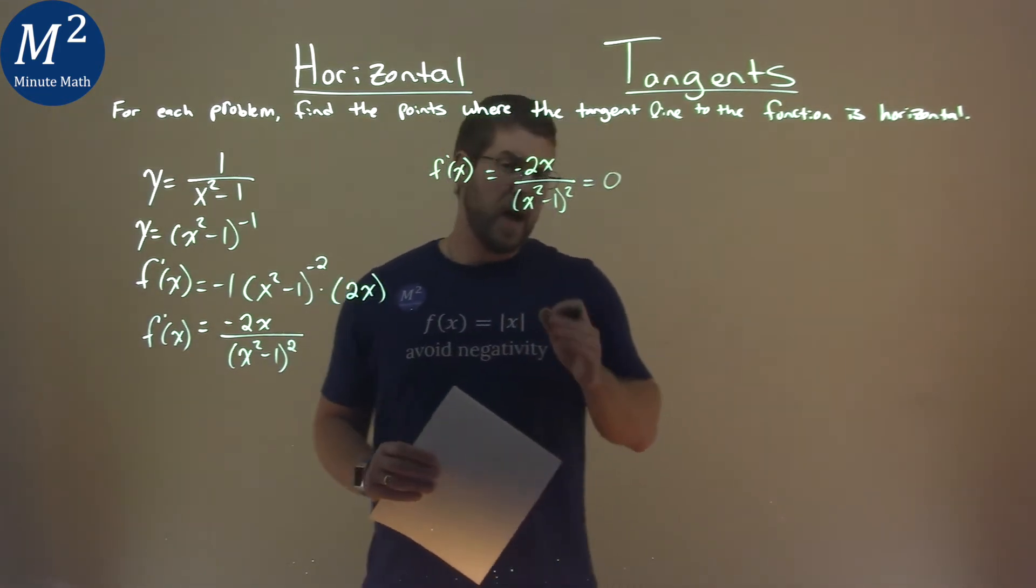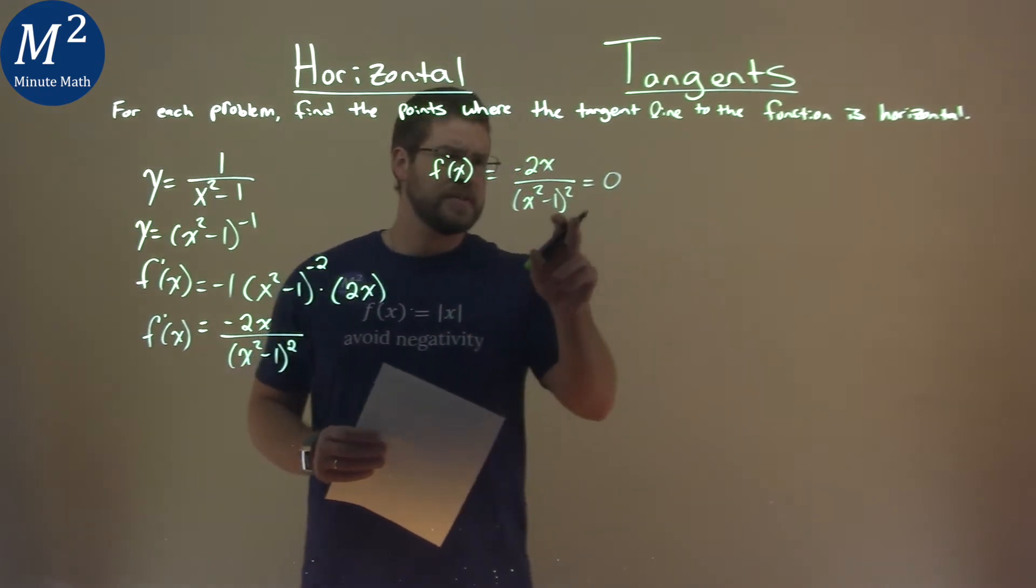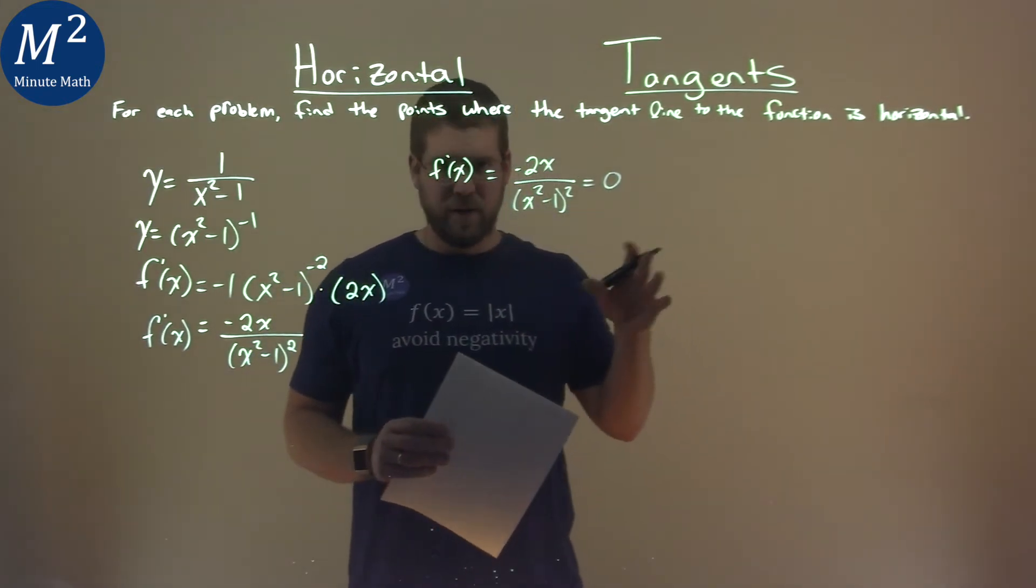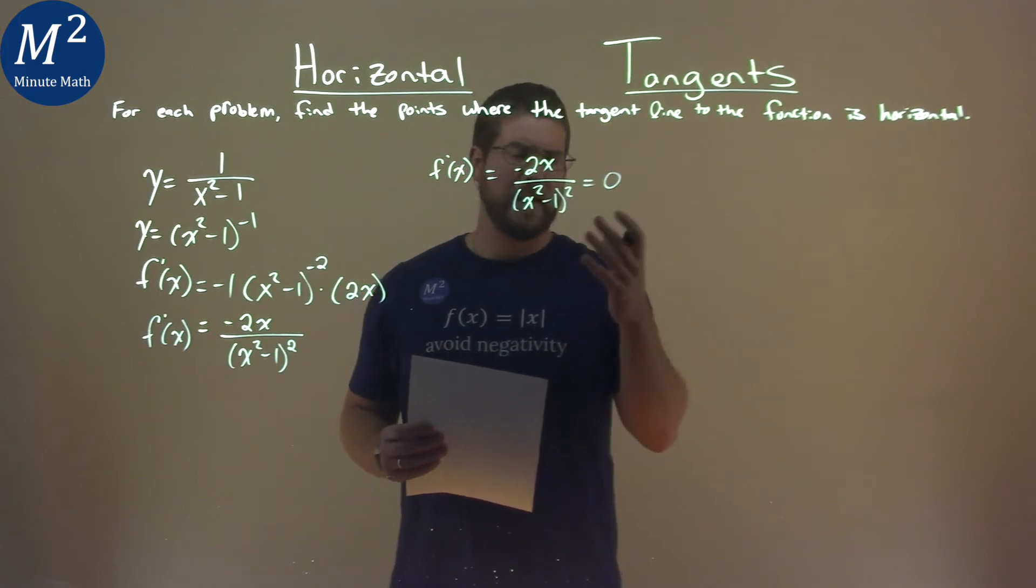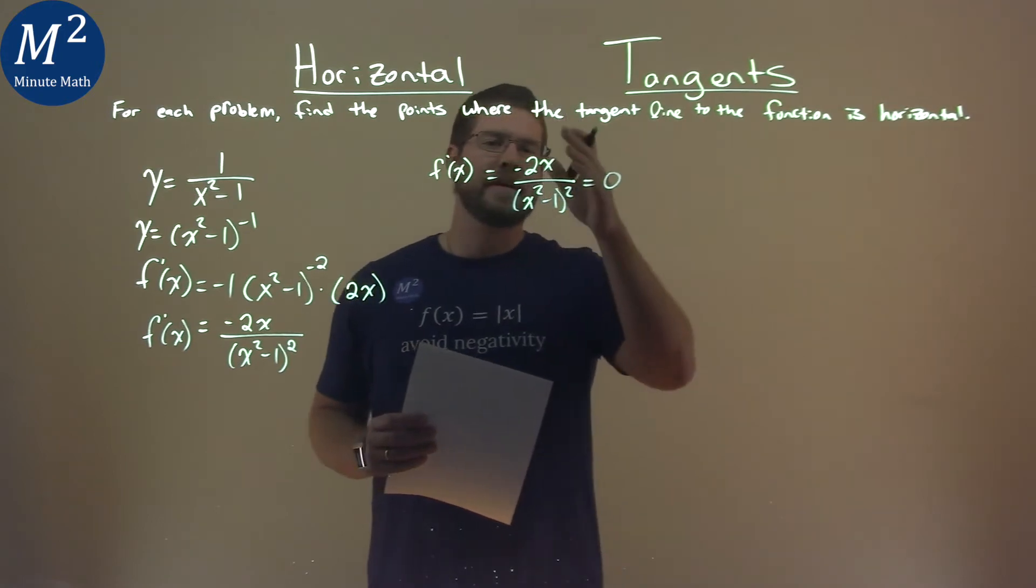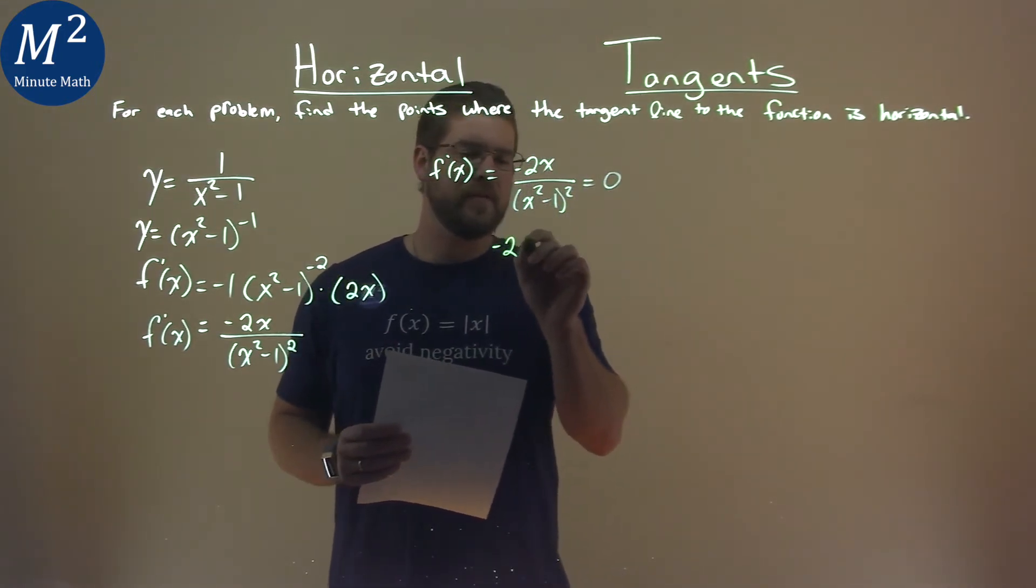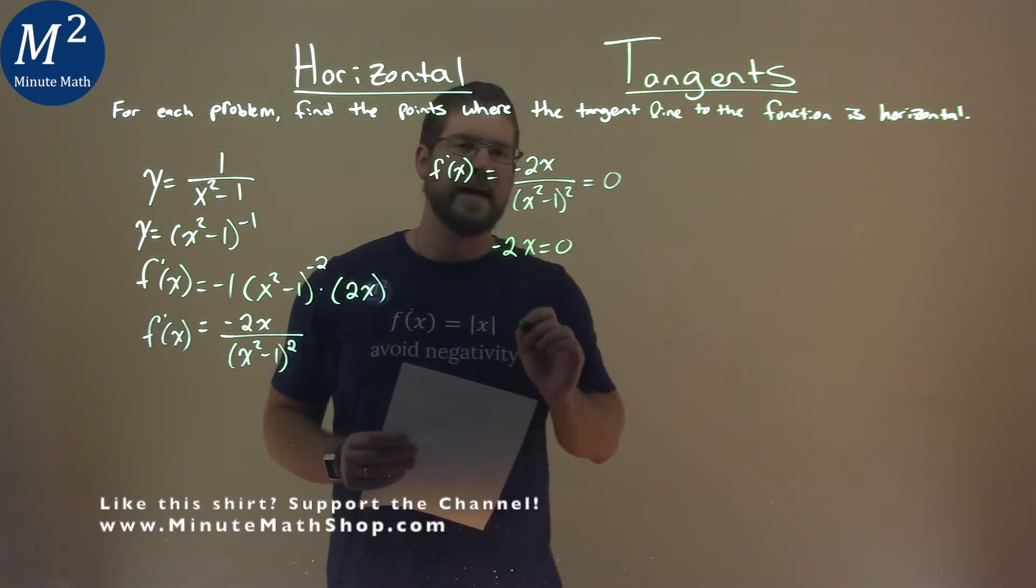Well, this is where the knowledge of rational functions is important. Our rational functions here, we know if we're dividing by 0, our function's undefined there, we can't do that. And so really, there's nothing that a denominator can do to determine our function that's equal to 0. So we just have to look at the numerator, negative 2x equals 0, and solve.